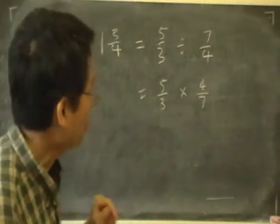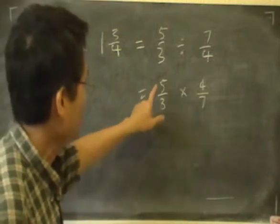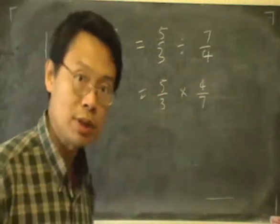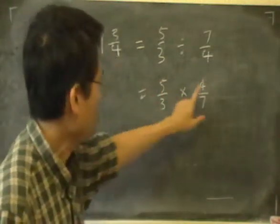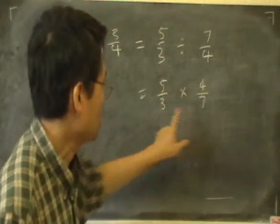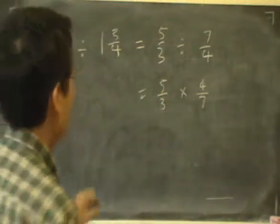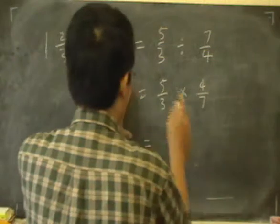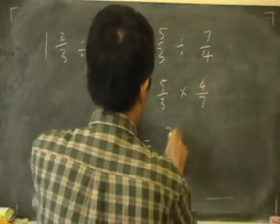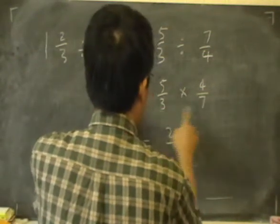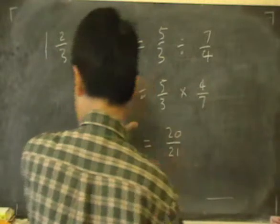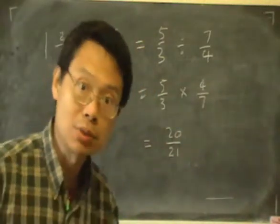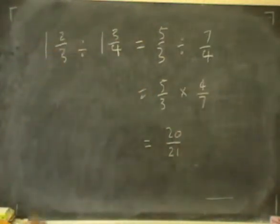Once we have this, then we can multiply directly the numerators, numbers on top, and the denominators, the numbers at the bottom. So on top, we would have 5 times 4, which is 20, divided by 3 times 7, which is 21. And that is the answer to this sum.